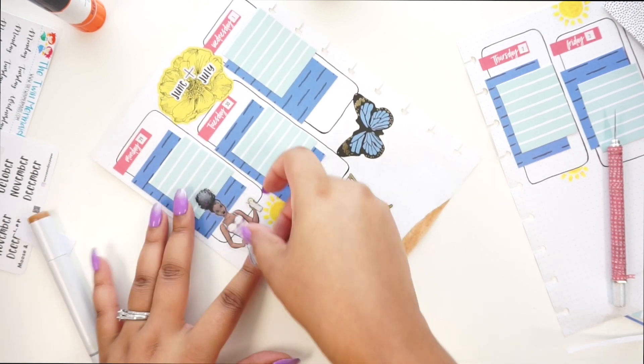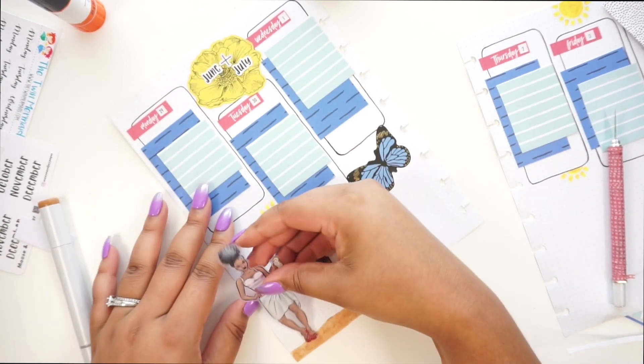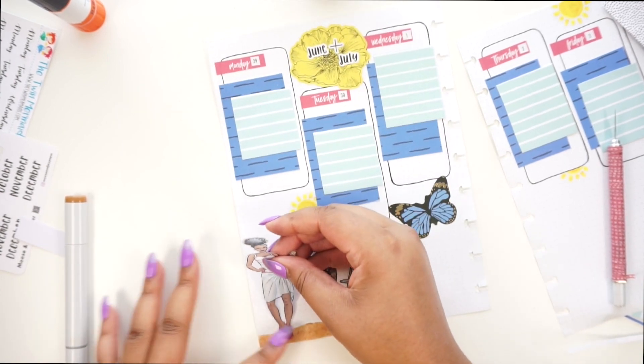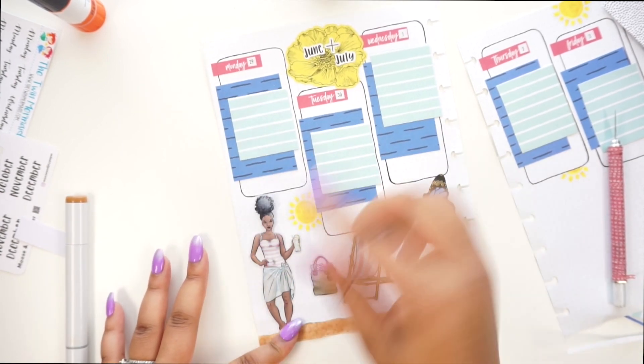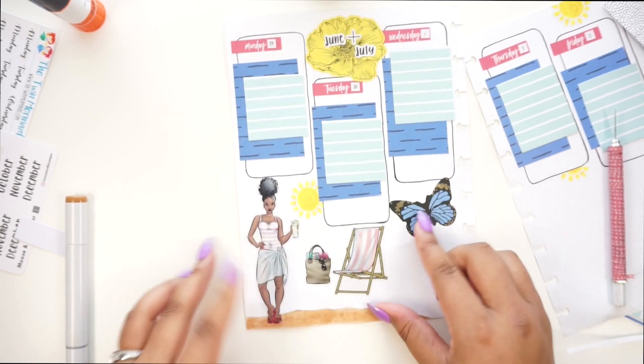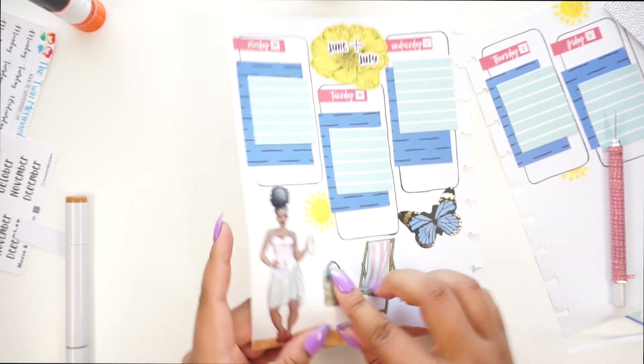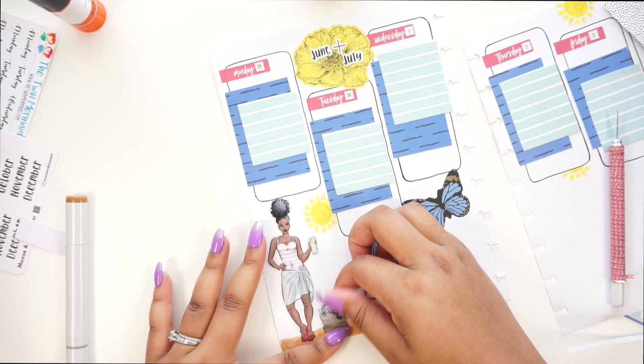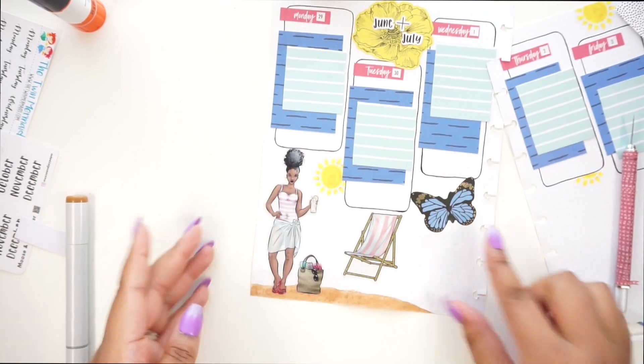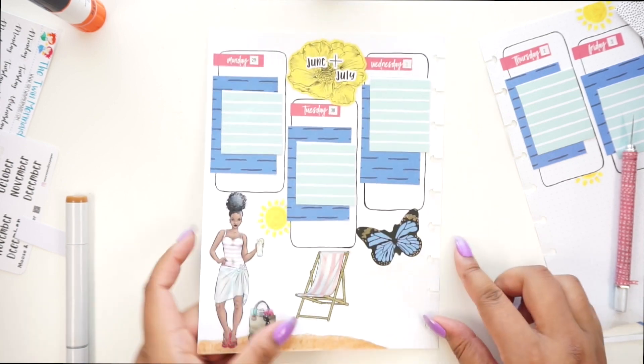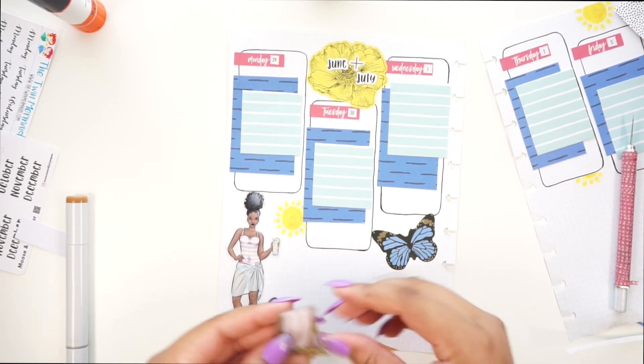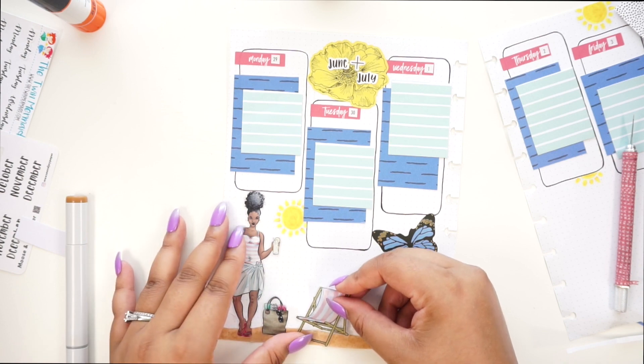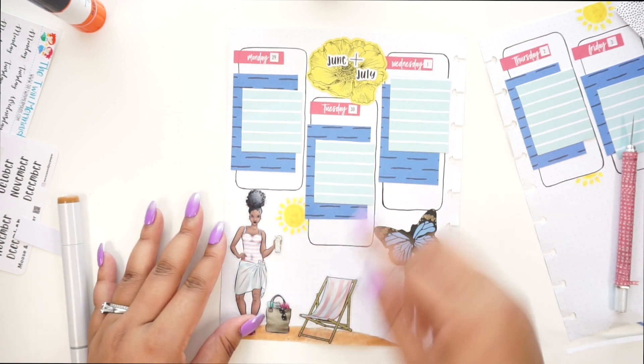All right, so sit her there. Sit her beach bag right beside her. And the beach chair right here.